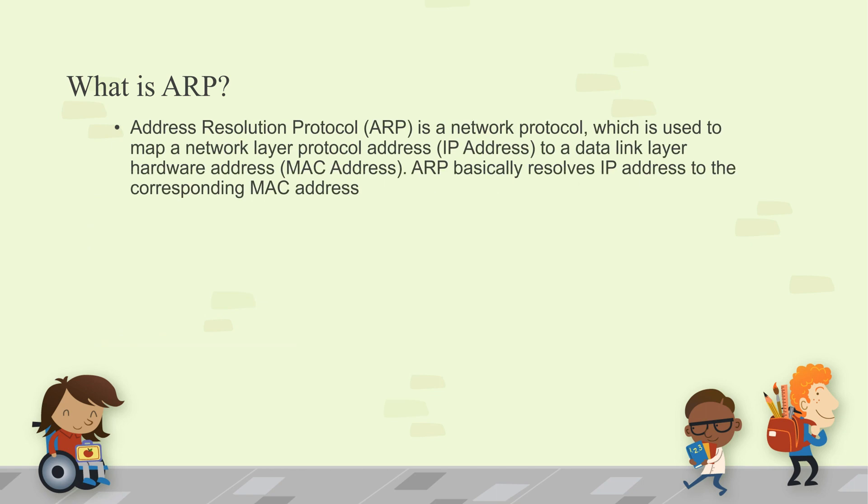What is ARP? ARP stands for Address Resolution Protocol. It is a network protocol used to map a Network layer address (IP address) into a Data Link layer address (hardware address / MAC address). ARP basically resolves an IP address into the corresponding MAC address.